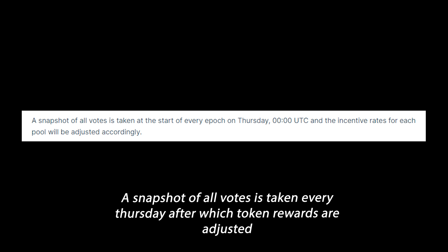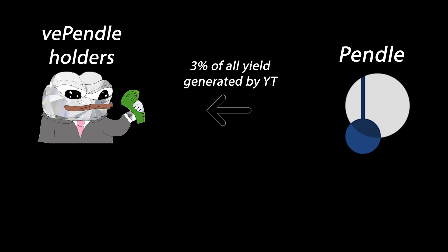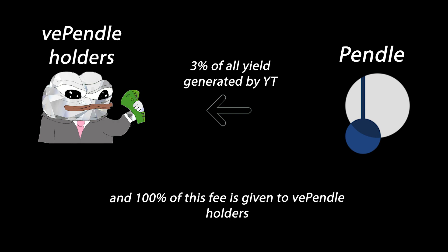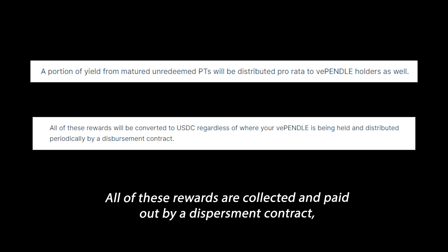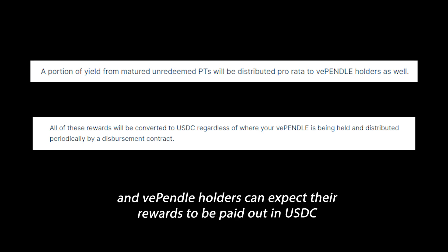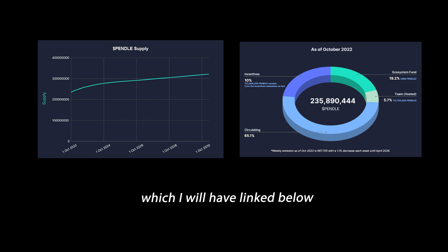A snapshot of all votes is taken every Thursday, after which token rewards are adjusted. Another important thing to note about Pendle is that 3% of all yield generated by YT tokens is collected by the platform, and 100% of this fee is given to vePENDLE holders. The platform also takes a cut of the yield from matured unredeemed PT tokens, which is also given to vePENDLE holders. All of these rewards are collected and paid out by a disbursement contract, and vePENDLE holders can expect their rewards to be paid out in USDC. Users can also check out statistics about the Pendle token supply and inflation rate on their docs, with a link provided below, along with a link to a relevant Dune dashboard.